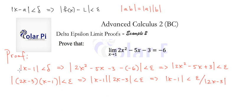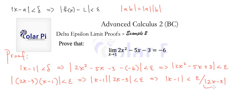It's tempting to claim that δ = ε / |2x - 3|, but we don't like that because it's not a simple relationship between delta and epsilon — moreover, it involves x. We want a relationship involving only epsilon, numbers, and delta. So we want something like δ = ε times some constant.